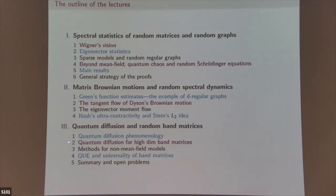I'll start by introducing quantum diffusions for the random Schrödinger operator, introducing the phenomena, then discuss quantum diffusions for band matrices. The method is quite different from all our previous work. We'll also discuss why QE is important, how universality connects to it, and finally a summary.